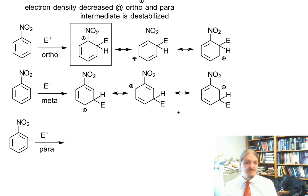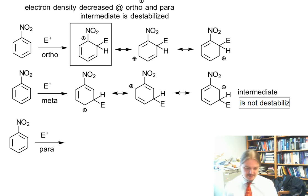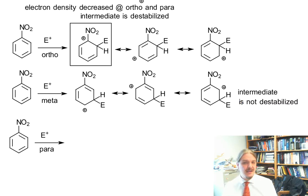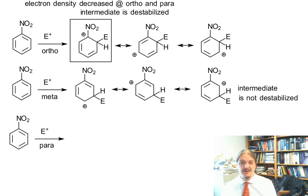Here are all the resonance structures for the meta attack. Positive charge is ortho, para, ortho to the electrophile, and none of those positions end up next to the electron-withdrawing group. So we can say the intermediate is not destabilized. If you remember from the electron-donating case, the ortho intermediate was stabilized and the meta intermediate was not. Here in the electron-withdrawing case, it's not that meta is stabilized — it's just not destabilized, and that's the big difference.